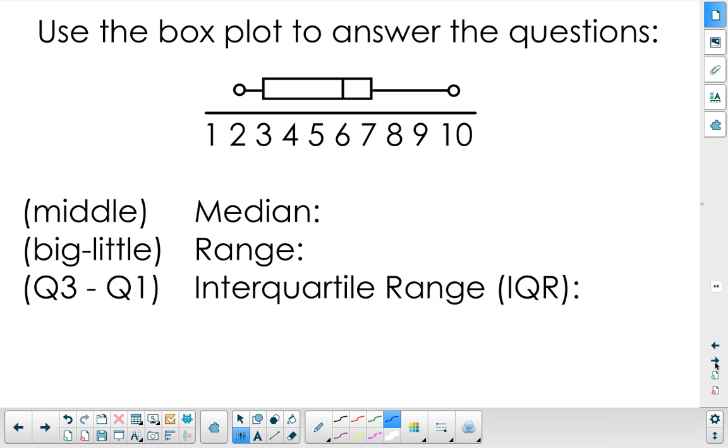Let's take a look at a box plot to answer a few questions. When I'm looking for the median, I find that middle line is 6. It wants the range: 10 minus 2 is 8. And then the interquartile range is I find my larger quartile, 7, subtract the smaller one. 7 minus 3 equals 4.